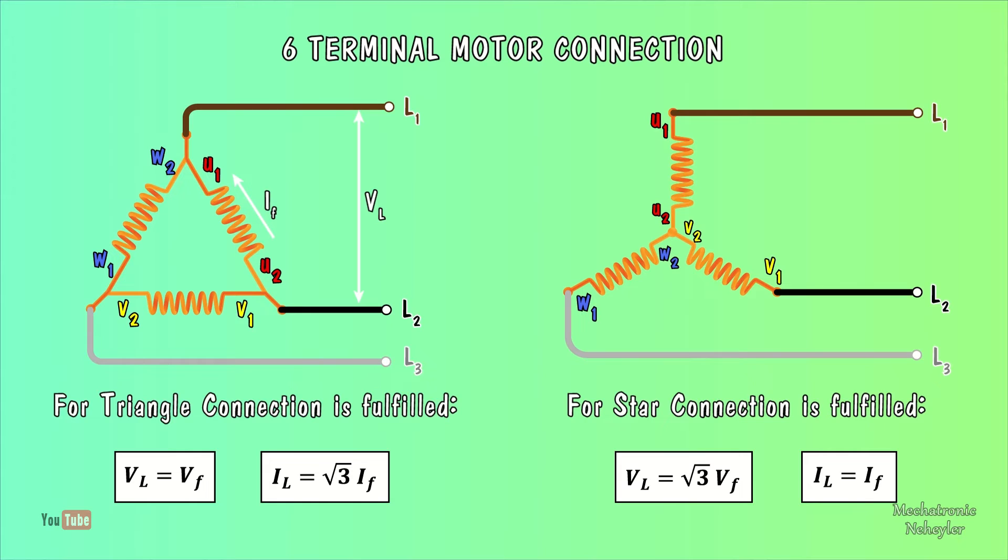For the star connection it is fulfilled: the line voltage is equal to the square root of three multiplied by the phase voltage, while the line current is equal to the phase current.